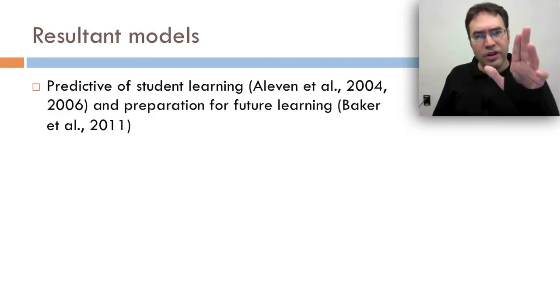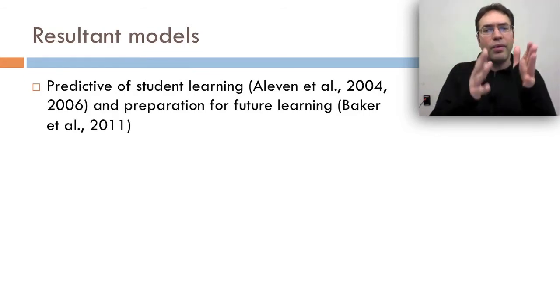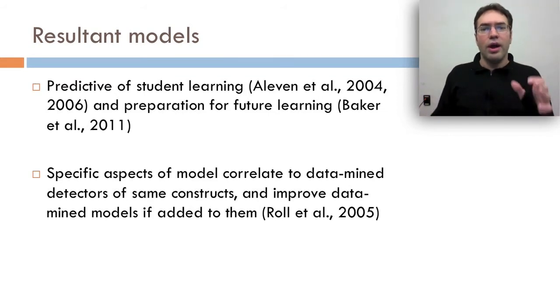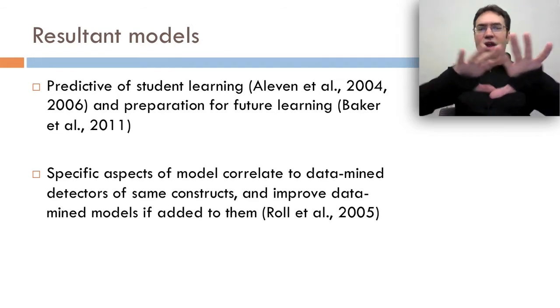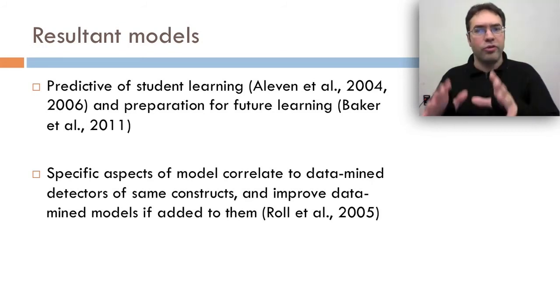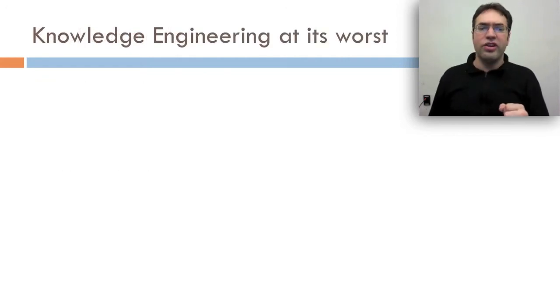You take all these things together, and you get a pretty good system. You get resultant models that are predictive of student learning, and even predictive of student preparation for future learning. Specific aspects of the model correlate to data mined detectors of some constructs and improve the data mine models that are added to them. So not only do these models capture the constructs, and capture the constructs in not the same way but comparably to data mine models, but they can even capture some of the variance that's not captured by the data mining models. That's knowledge engineering at its best.